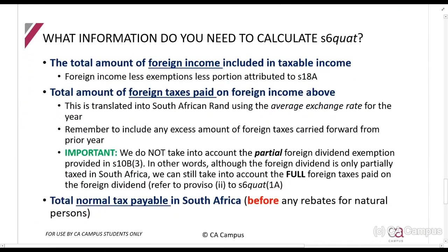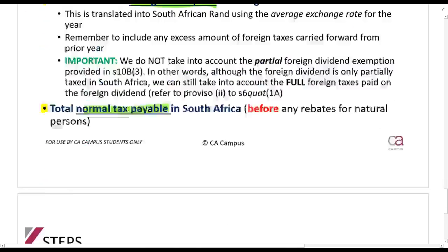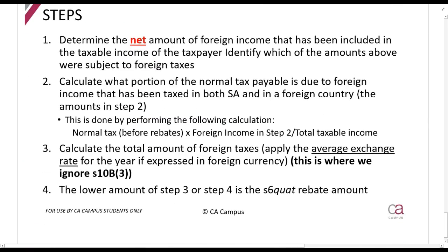To calculate Section 6quat, you need three key amounts: the total foreign income, the total foreign taxes paid, and the normal tax paid in South Africa. The steps are: first, determine the net amount of the foreign income; then determine what portion of the South African tax is attributable to that foreign income; then compare that amount to the foreign taxes paid, and use the lower of the two.